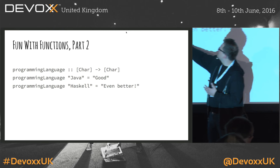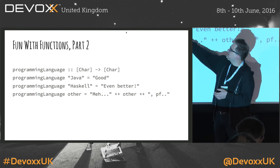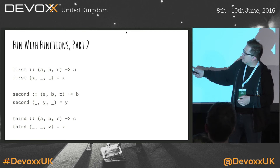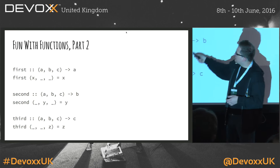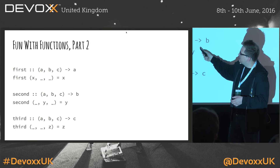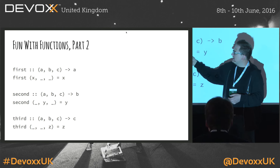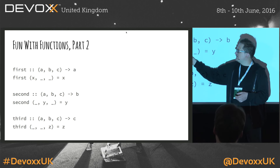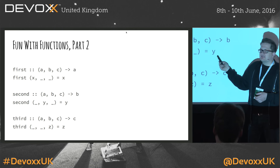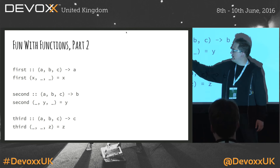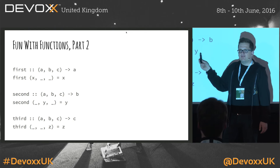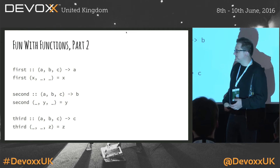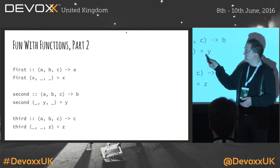There's also pattern matching for concrete values. You can do, like, if programming is Java — good; Haskell — even better. You can also pattern match against a tuple, where you're not really interested in the first and third values — they can be anything — you're only interested in the second value Y. Since you don't use the others in the definition, you can just use underscore, signaling to whoever reads your code in six months that we are not using those two values.